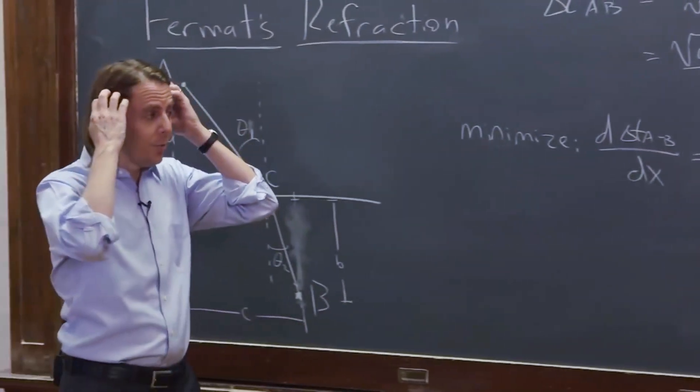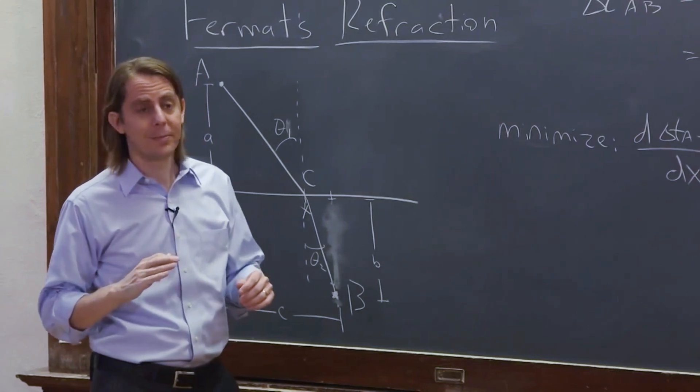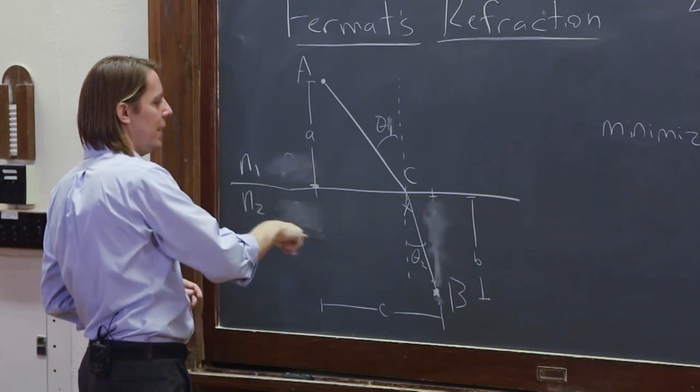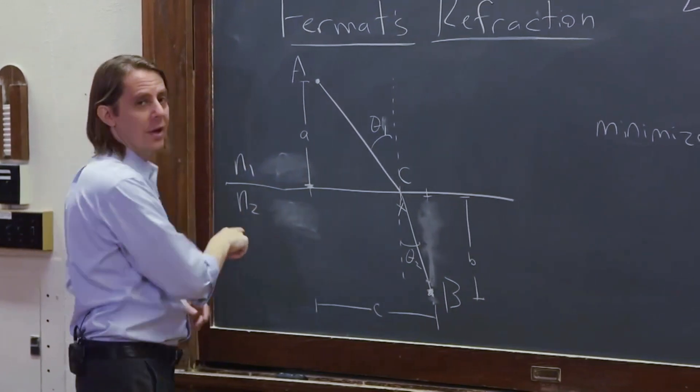And it's going to turn into Snell's Law because the V's are not the same. All right, that's the key. You're going at a velocity here, the speed of light over N1. And you're going at a velocity here, the speed of light over N2.